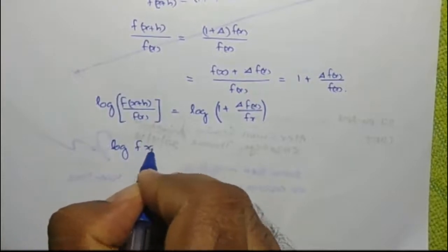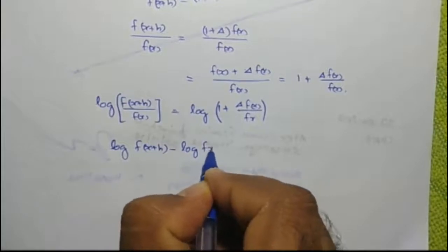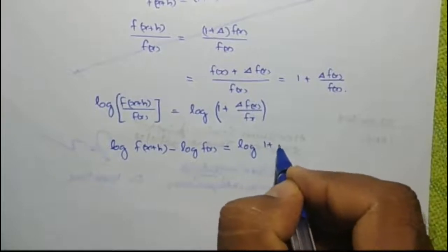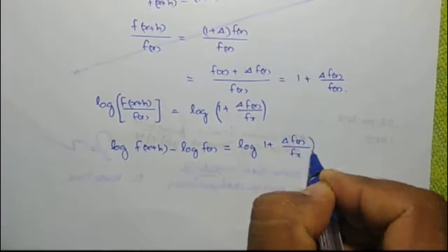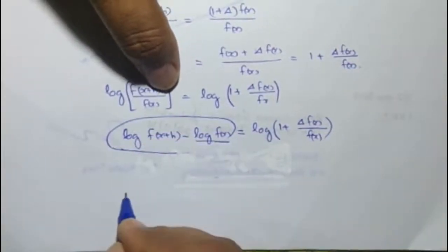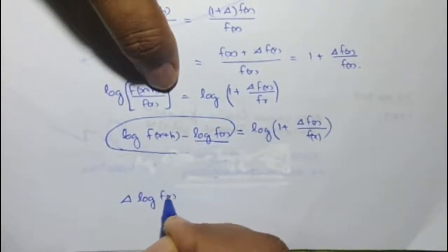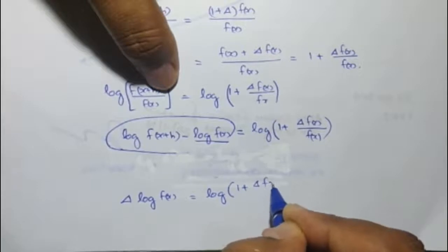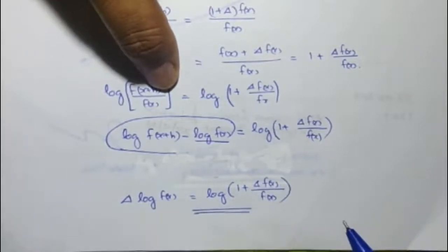Taking logarithms, delta log f of x equals log f of x plus h minus log f of x equals log of f of x plus h divided by f of x, which equals log of 1 plus delta f of x by f of x. This completes the proof.